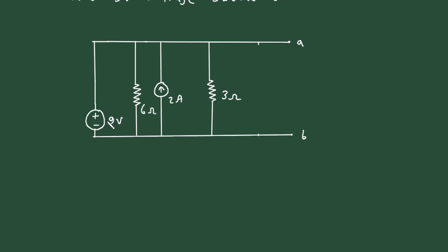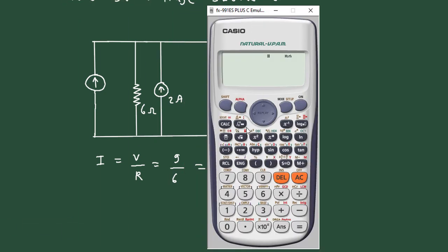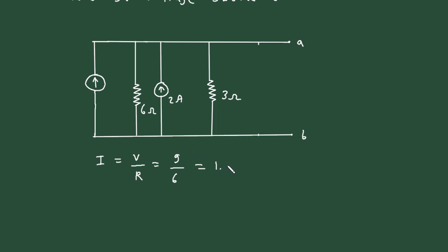The polarity of this voltage source is positive on the upper side and negative on the down side. So the equivalent current source direction will accordingly be upward. According to Ohm's law, I is equal to V by R. The voltage source is 9 volt and the resistance value is 6. So it will be 9 by 6, which is 1.5 ampere.